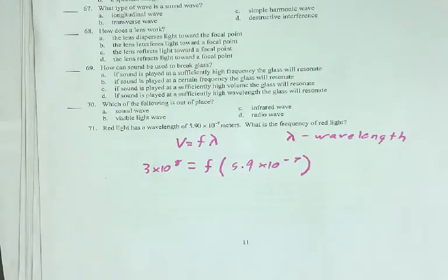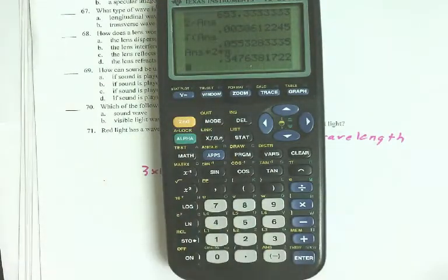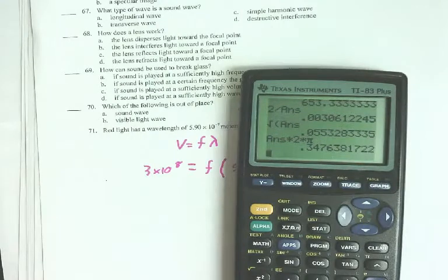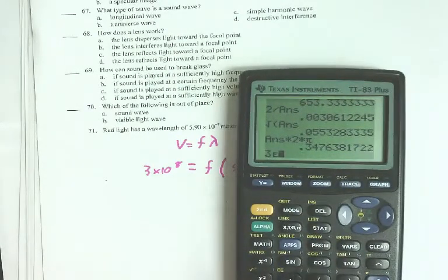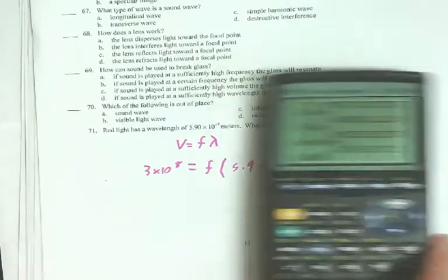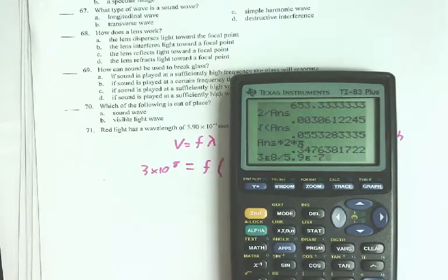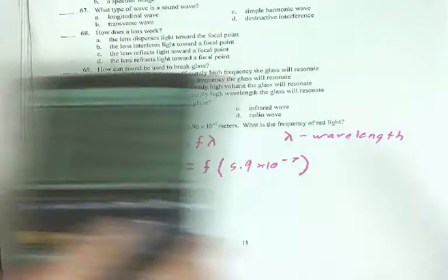Just as a recap on how you plug things in for scientific notation. So 3 second EE is my times 10 to the 8th power divided by 5.9 EE to the negative 7th power gives me a frequency of 5.08, so 5.1 times 10 to the 14th.